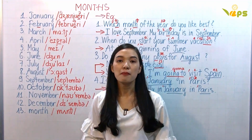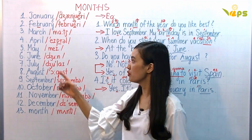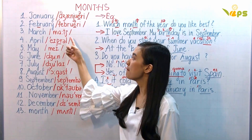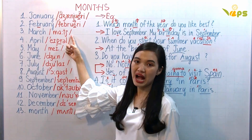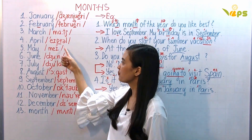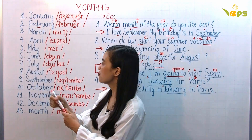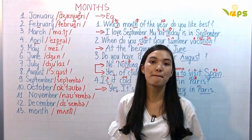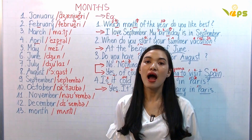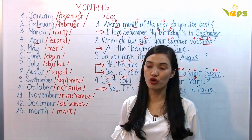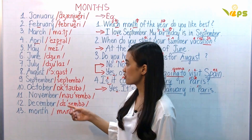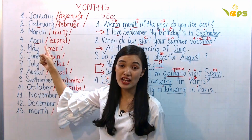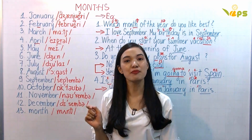Now, March — remember the CH sound. March. This one: April — remember the 'prr' sound. April. Some students say 'April' or 'April' incorrectly. The correct pronunciation is April.